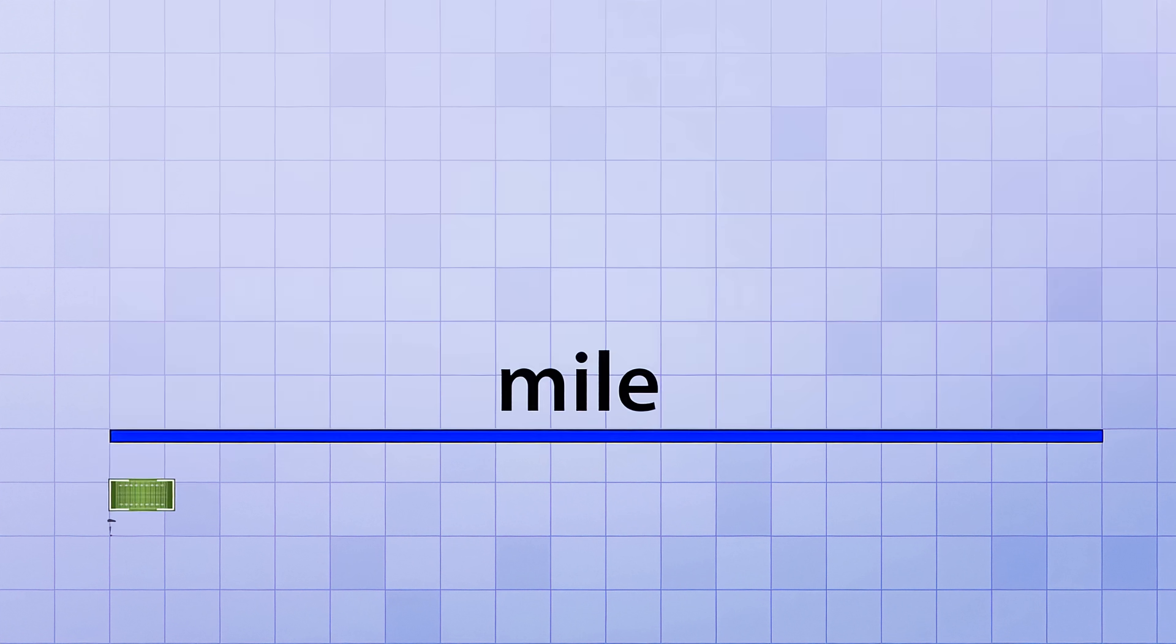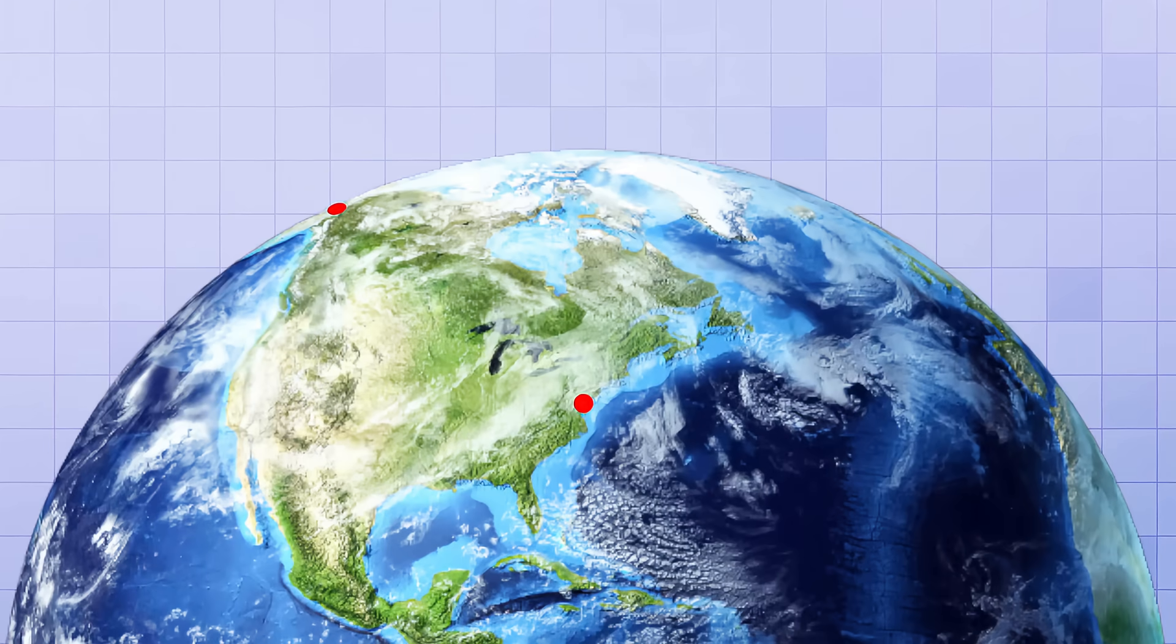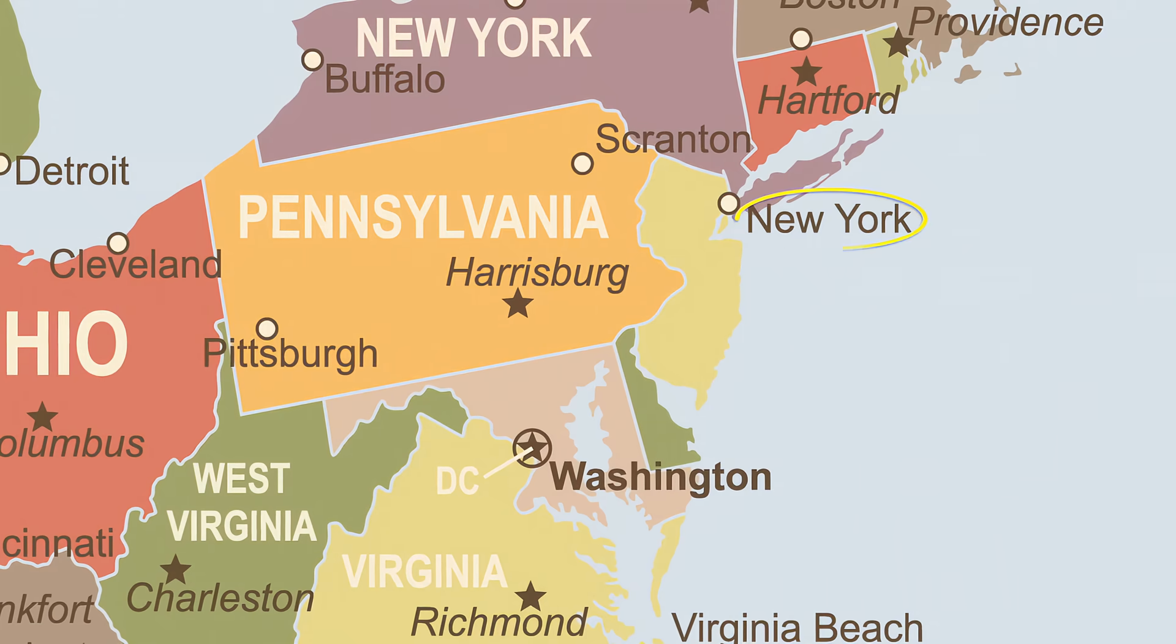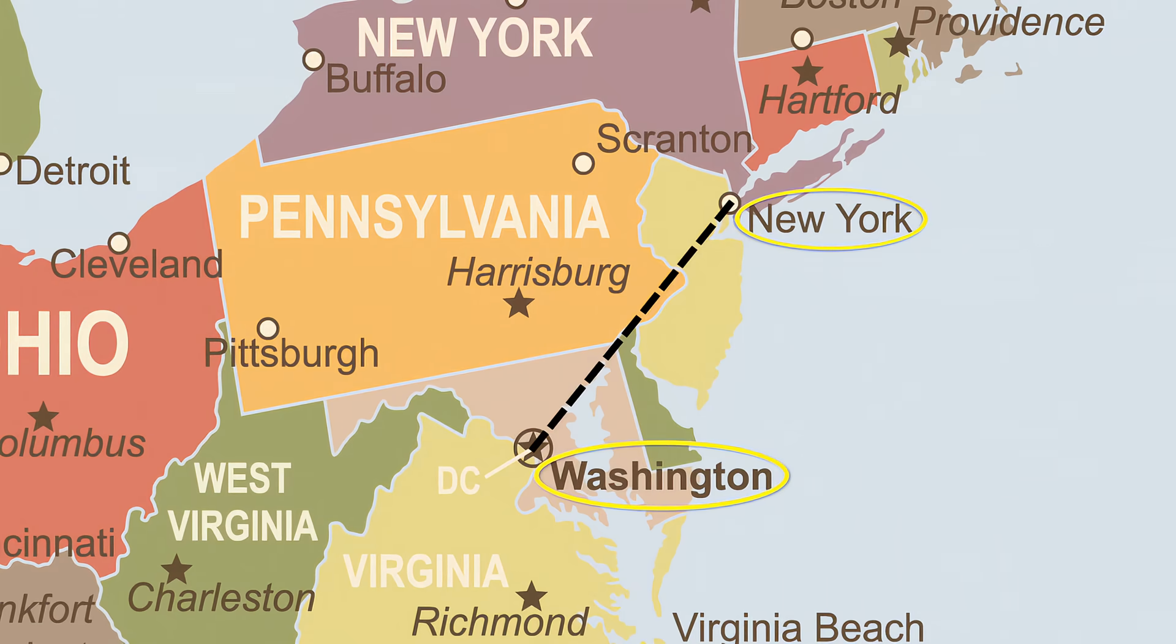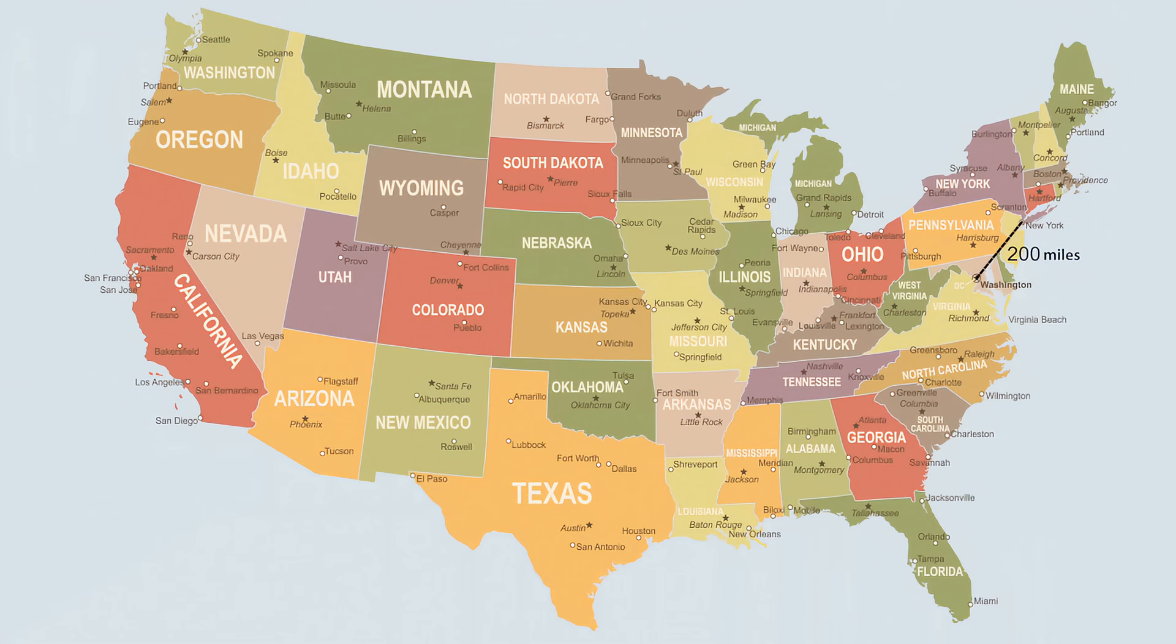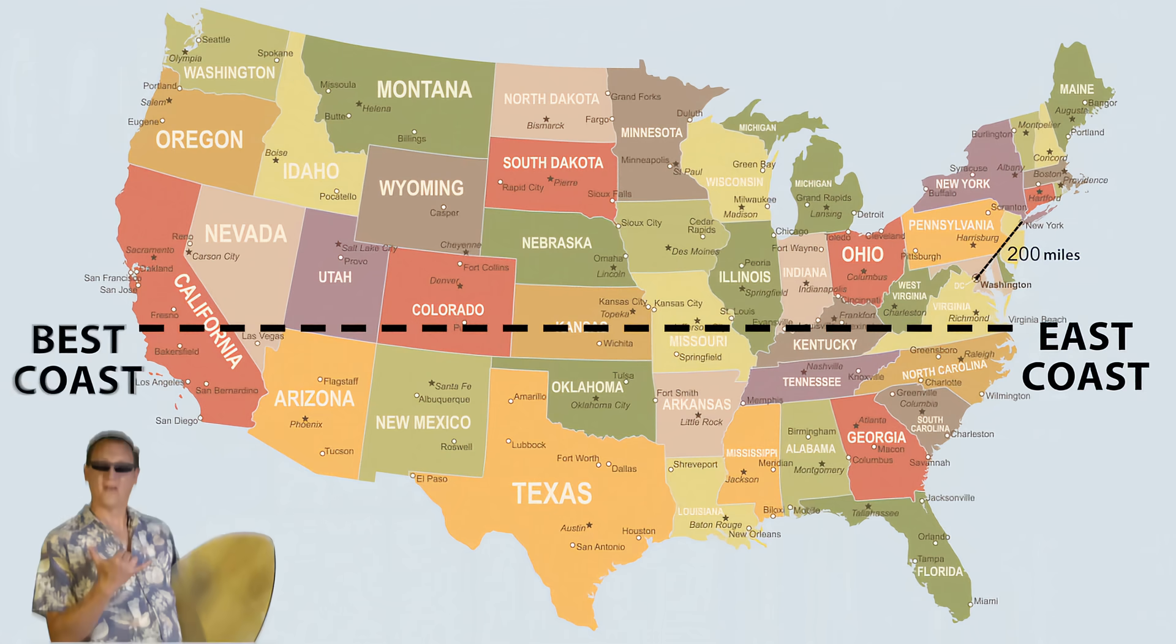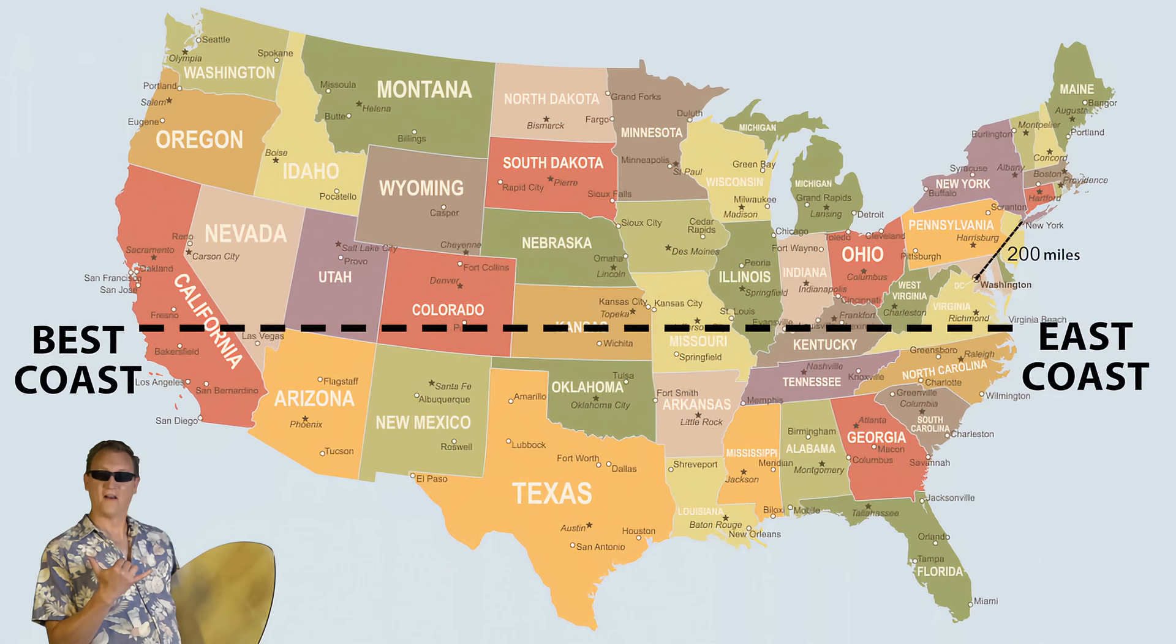Because miles are so long, they're mainly used to measure distances between various places on Earth and how far people travel. For example, the distance from New York City to Washington DC is roughly 200 miles, as the crow flies. And the distance from the East Coast of the US to the West Coast, or the Best Coast, whichever you like to call it, is over 2,600 miles.